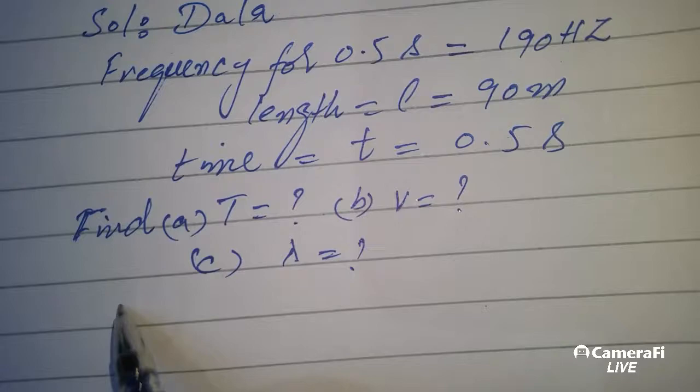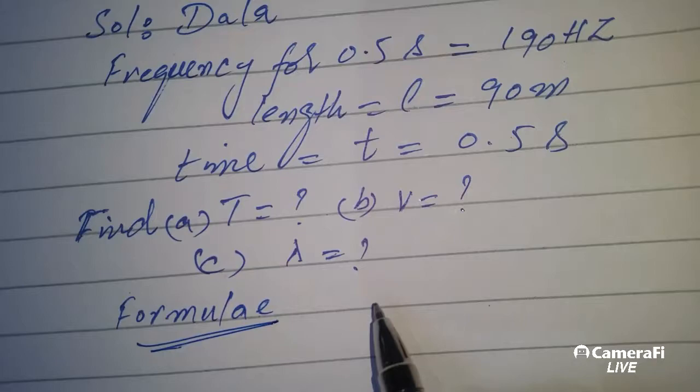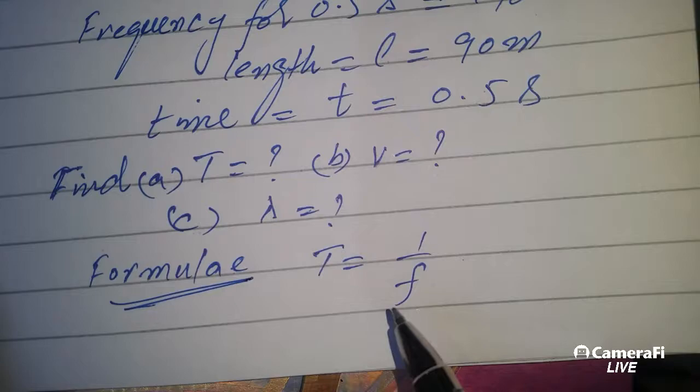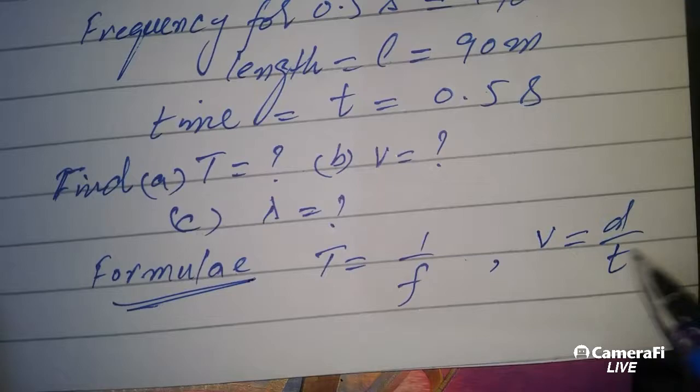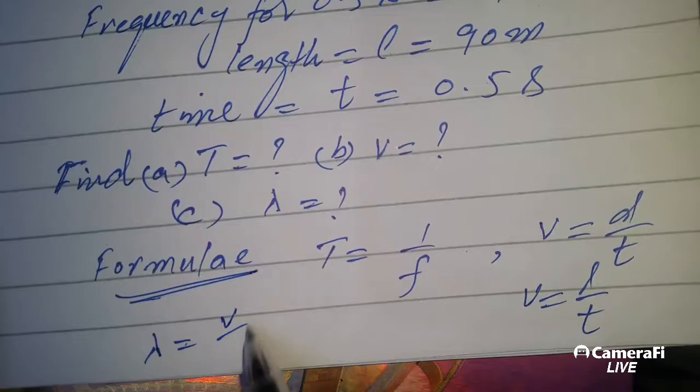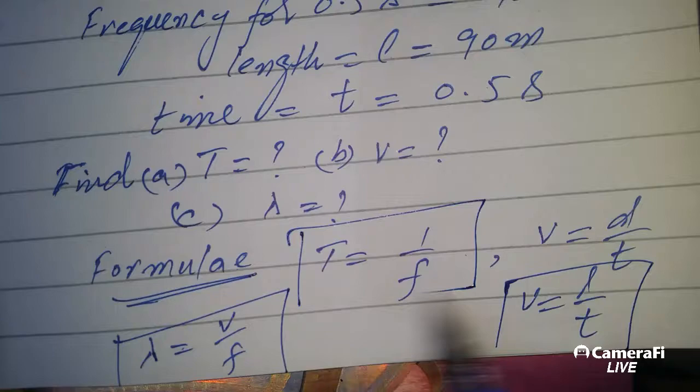Formulas that we can apply: T is equal to 1 over f. V is equal to d over t or v is equal to L over t. And lambda is equal to v over f. These are the three formulas that we can apply.